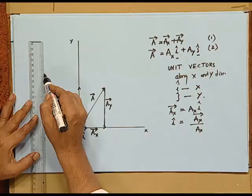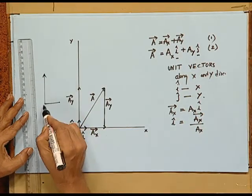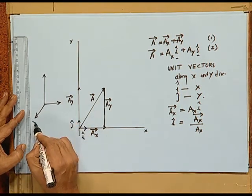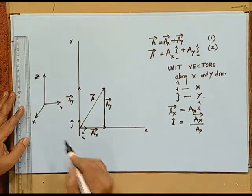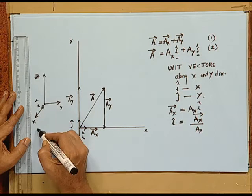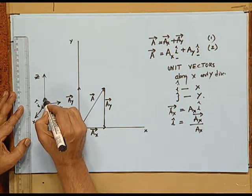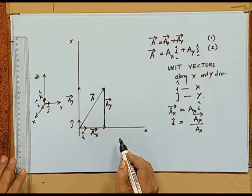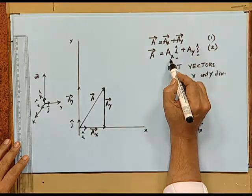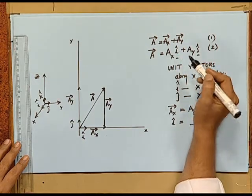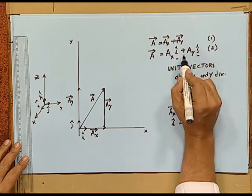In three dimensions, we also have a unit vector along the z-axis. When you have x, y and z in space, you have unit vector i along x, unit vector j along y, and unit vector k along z direction. This is the standard representation used to represent vectors along these three mutually perpendicular directions. So vector A is written as Ax i-cap plus Ay j-cap.